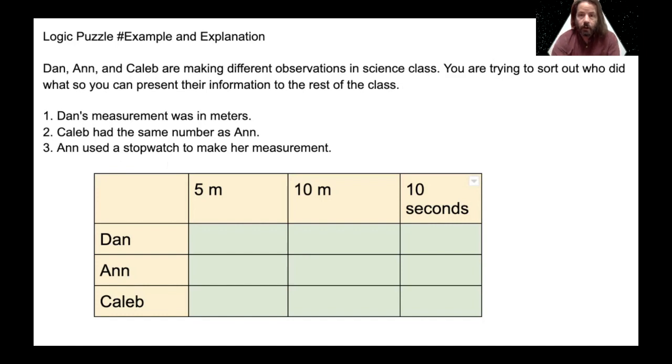Okay, so there are multiple ways to do this. I'm going to do it one way by just going down each item at a time and working through it. So Dan's measurement was in meters. So Dan made a measurement in meters. He could have done this one and he could have done this one, but that means his measurement was not this one.